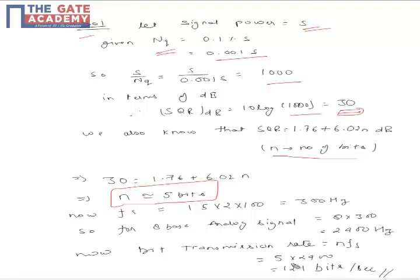Now it is given that our FS equals 1.5 times 2 times 100 Hz, which is equal to 300 Hz. So for 8 baseband analog signals, our sampling frequency is going to be 2400 Hz.